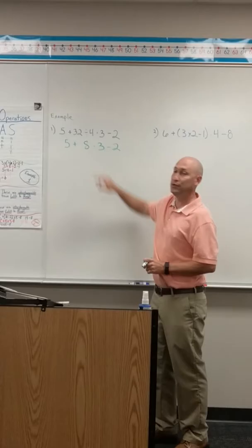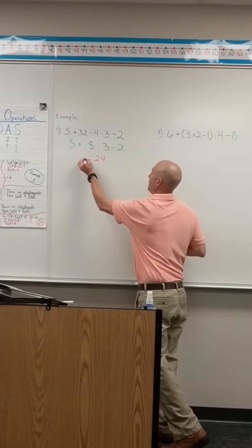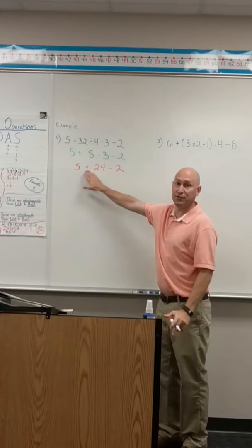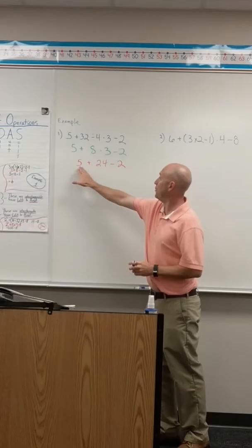And now look for my second step. I have addition, multiplication, and subtraction. I've got to go back to multiplication because it comes before addition and subtraction. And I'm going to do the 8 times 3. 8 times 3 is 24. I'm going to bring down everything around it.